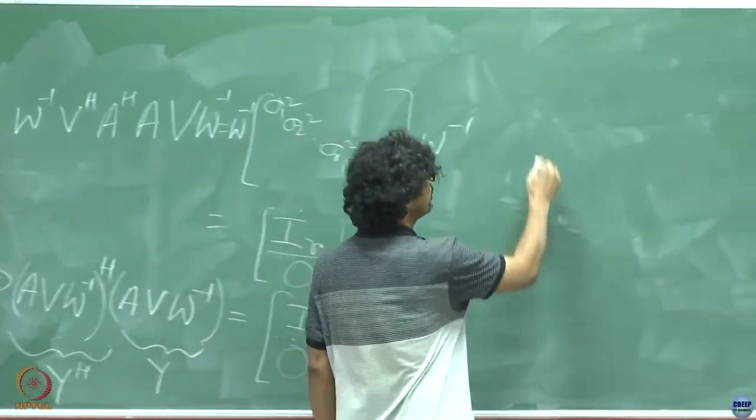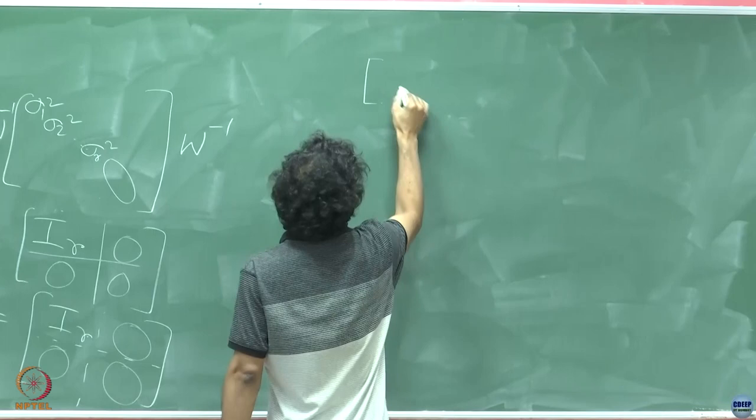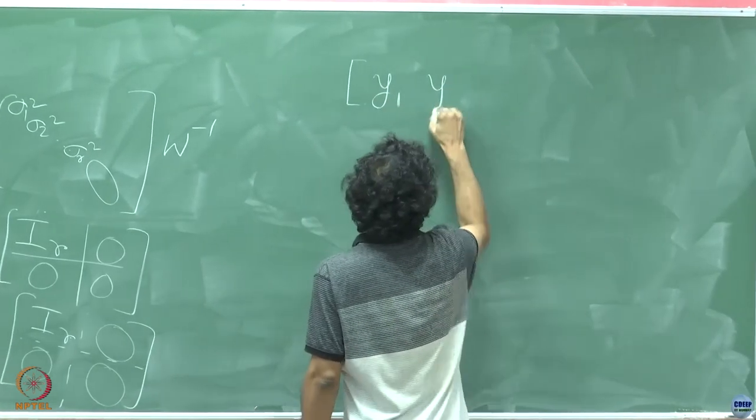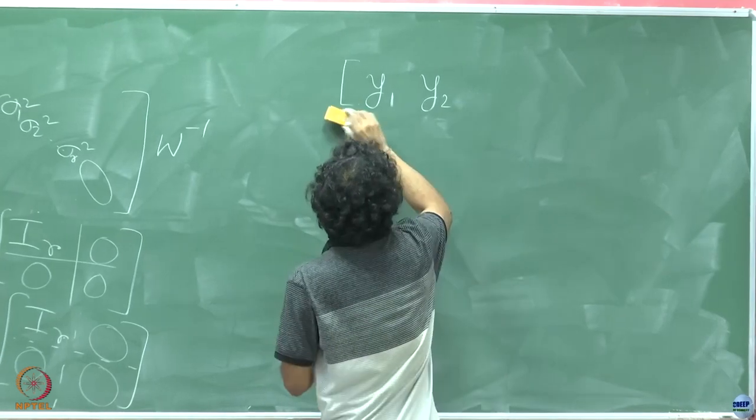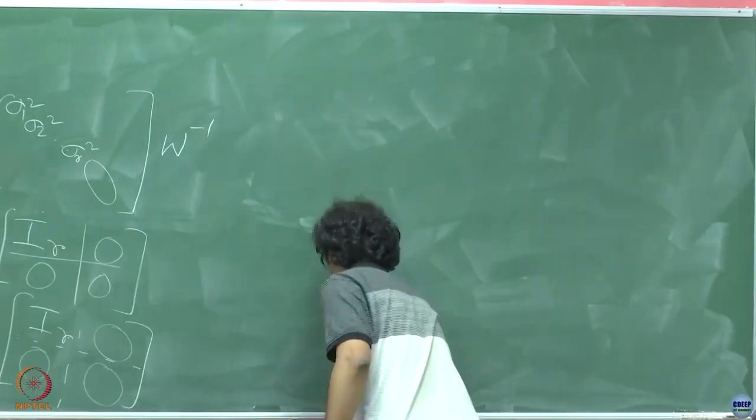So, if I write this down now in the following manner, this is y1, y2. Sorry, I should write this in the following manner: